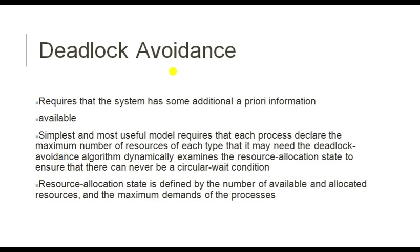Deadlock avoidance means before starting your program, you need extra information regarding the processes and resources so that you can draw the resource allocation graph and identify the deadlock. If a deadlock occurs while the program is running, you can either ignore the deadlock or kill the process and restart. This covers what deadlock is, what its characteristics are, when it will come, the significance of the resource allocation graph, and the different techniques to prevent, avoid, and detect deadlocks. Thank you.